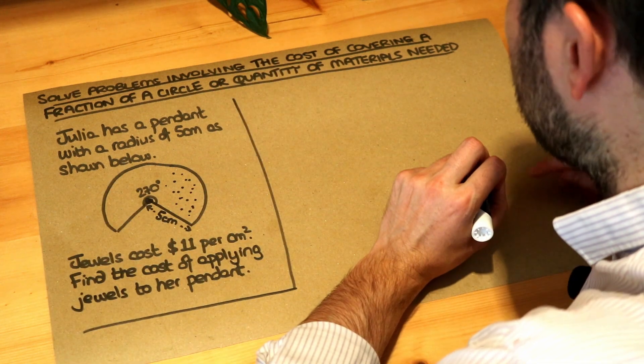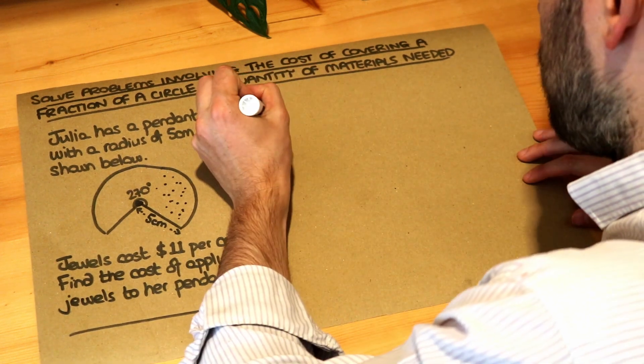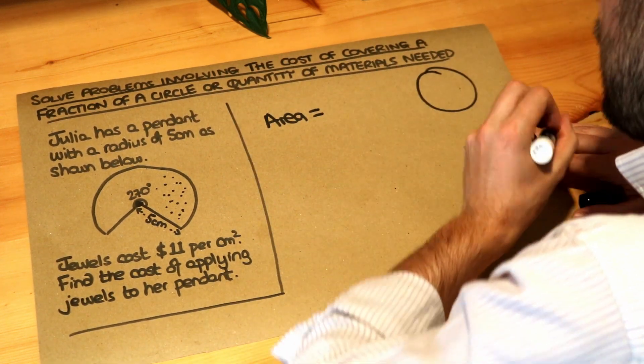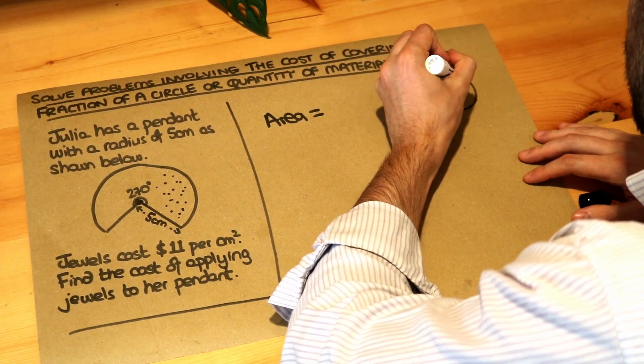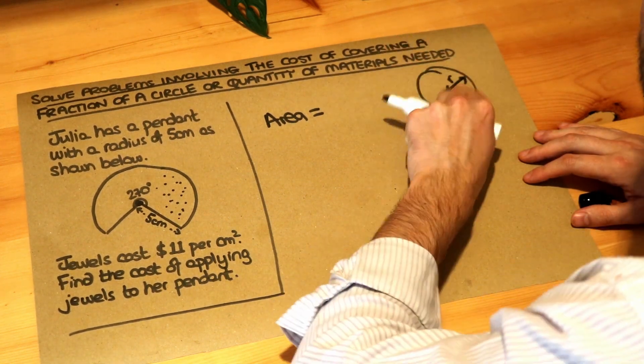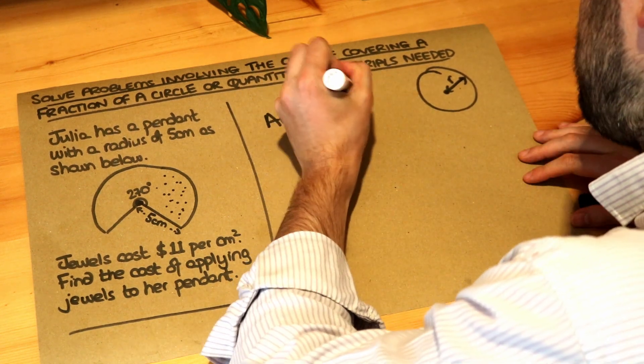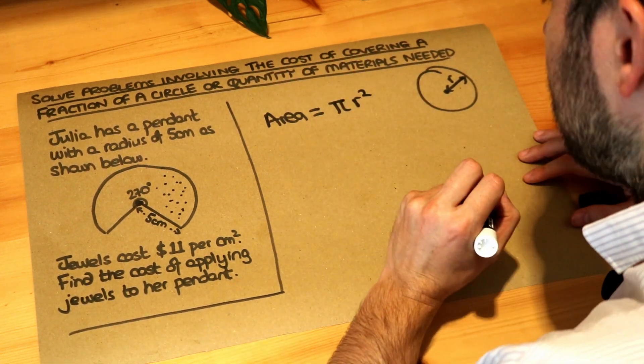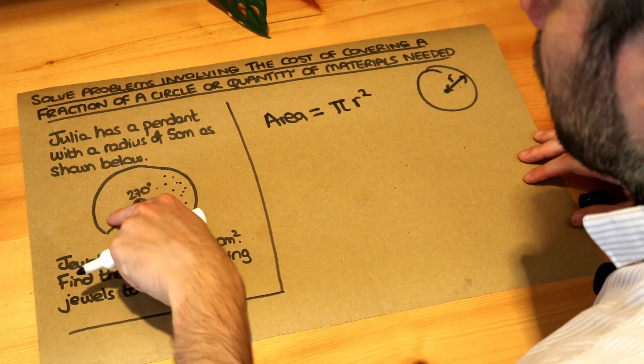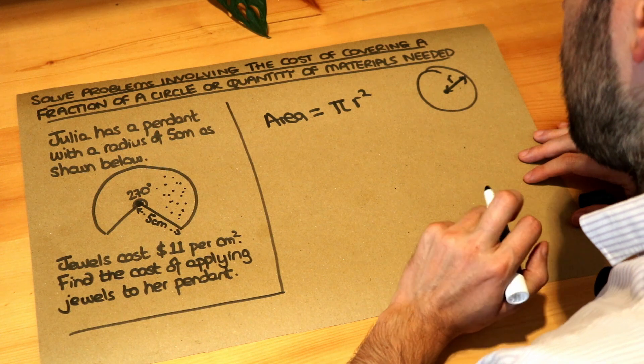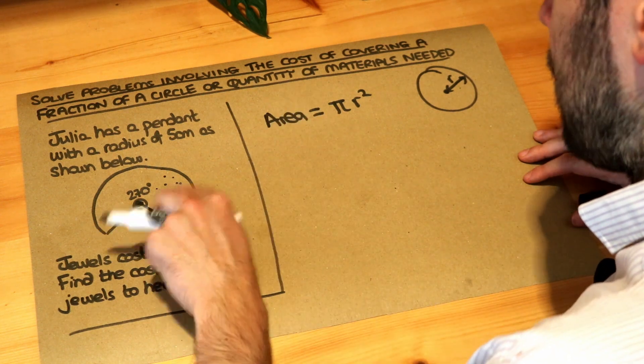So let's find the area of the pendant first. Now remember what the area of a full circle is. If we have a circle of radius r, remember from the center of the circle to the circumference, it's π times the radius squared. And we're going to have to find a suitable fraction of a full circle because we can see this is not a full circle. So let's find the area of this pendant.